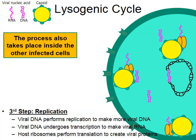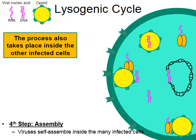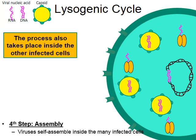Keep in mind we're now dealing with more than one infected cell because of that latent period when the cells went through mitosis and divided. The same process also takes place inside the other infected cells. This brings us to stage four: assembly. The parts of the viruses that have been created will self-assemble — DNA and a capsid come together to make a new virus, repeated until multiple new viruses are formed.